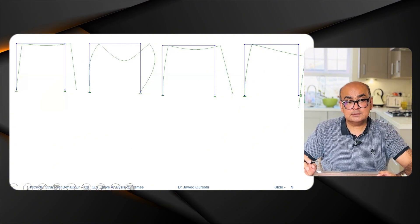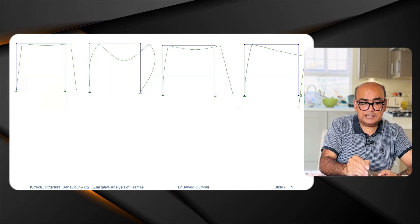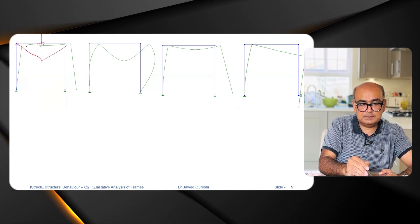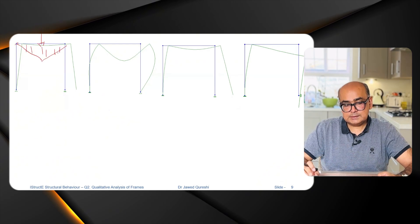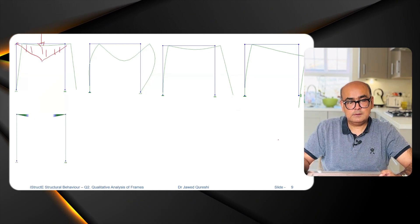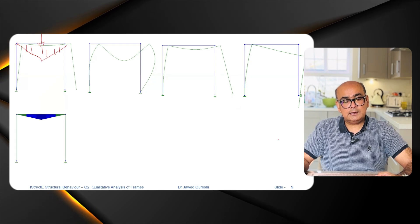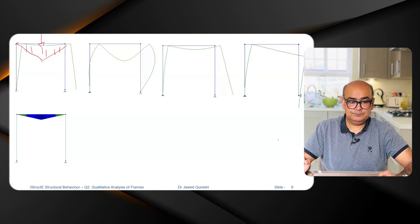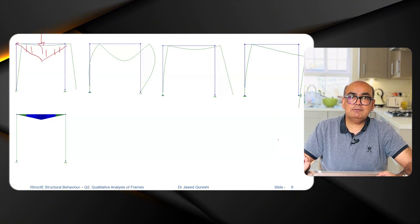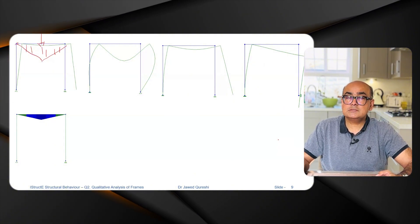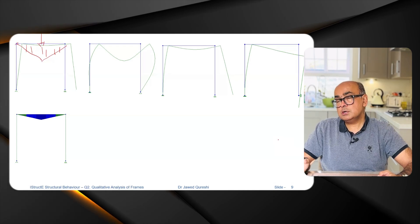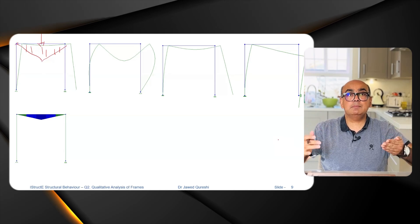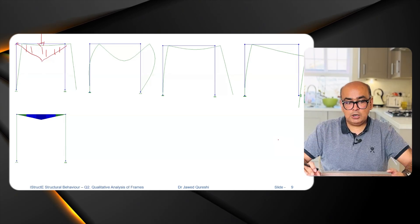For the first case, we have the applied loading in the beam, so the bending moment diagram will only be in the beam. You can see the bending moment diagram appears in the beam only — the columns are not bending at all and therefore have no bending moment. This is very crucial when designing structures: we need to see which members are taking which forces.